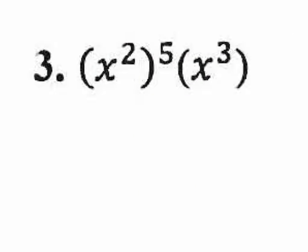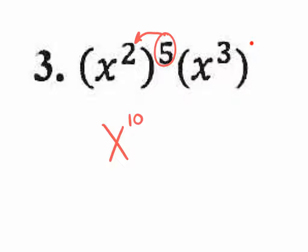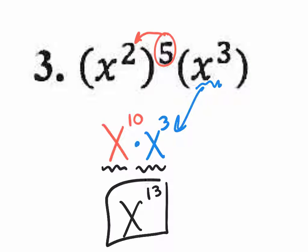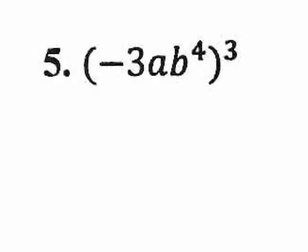Number 3 on the back: we're distributing the 5 that's on the outside. A power to a power — multiply: X to the 2 times 5 is X to the tenth. The other term has nothing to distribute, so bring it down: X to the third. Now rule one says X to the tenth times X to the third gives X to the thirteenth.